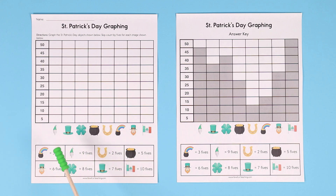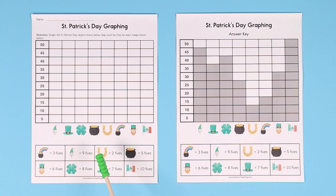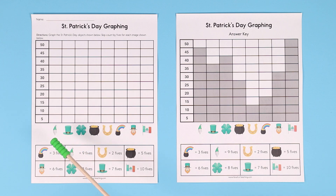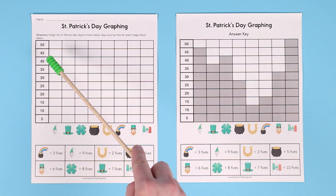So let's take the first example here — this little character. Find the character, and that character equals nine fives. So you skip count by fives, or for more advanced students you can do multiplication: nine times five. When you do nine times five, or skip count by fives nine times, you go up to 45. Students can choose different colors to make it fun, and color up to 45 on the bar graph.